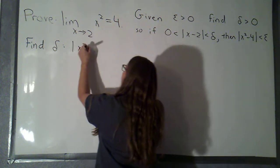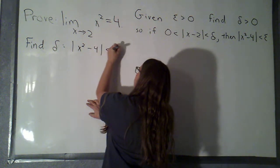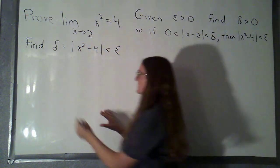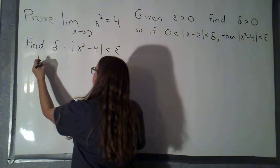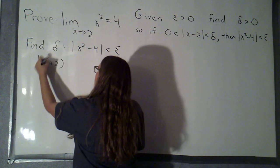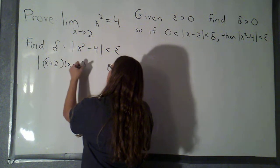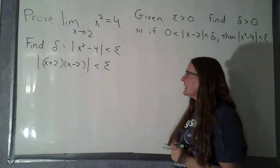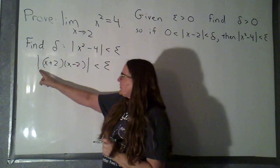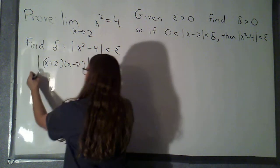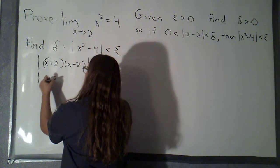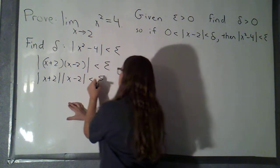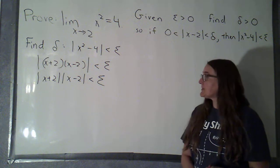So if I want the absolute value of x squared minus 4 to be less than epsilon, I'm just going to observe that I could factor this. So that factors as the absolute value of x plus 2 times x minus 2, and that's what I want to be less than epsilon. Absolute values distribute over multiplication, so this is the same as the absolute value of x plus 2 times the absolute value of x minus 2, which is what I want to be less than epsilon.